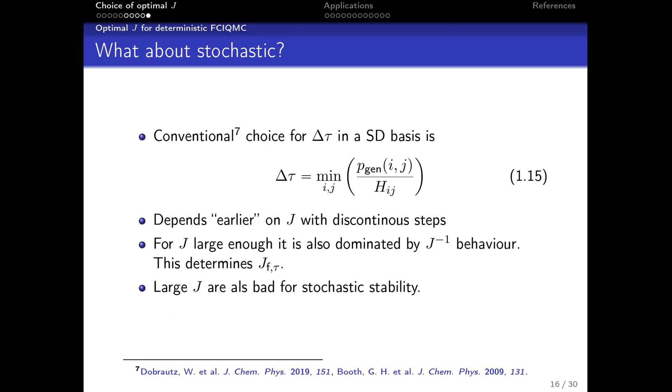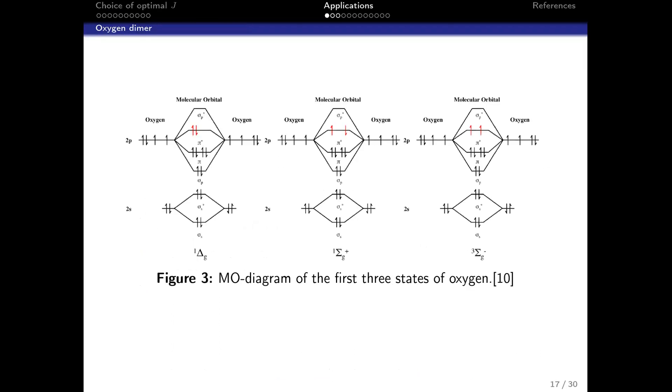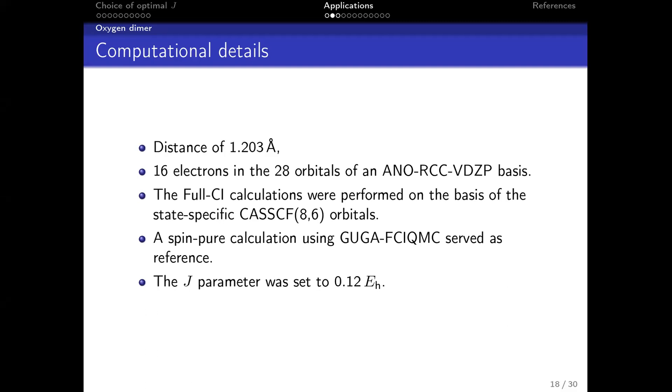Now we apply this to a very simple system. You all know the oxygen dimer and the three low-lying states. The ground state is this triplet Σ state, so we are in a ferromagnetic ordered system. Let's say you want to target the singlet Δ state - we need spin purification or spin eigenfunctions to achieve that.